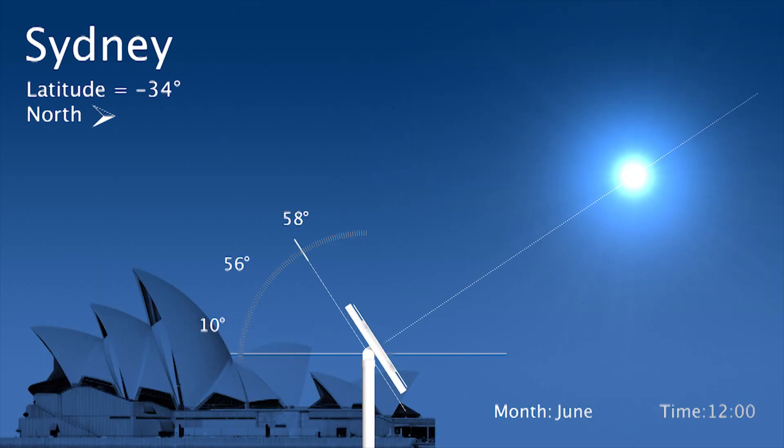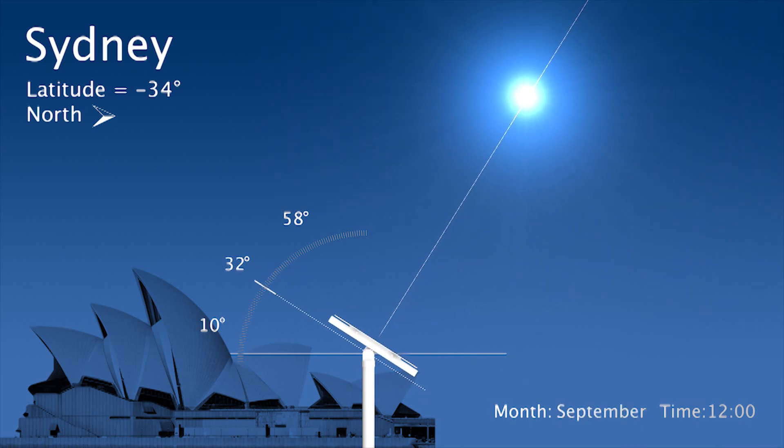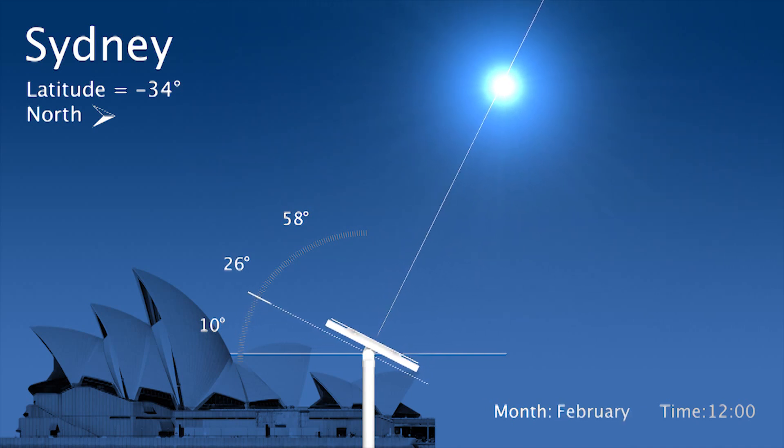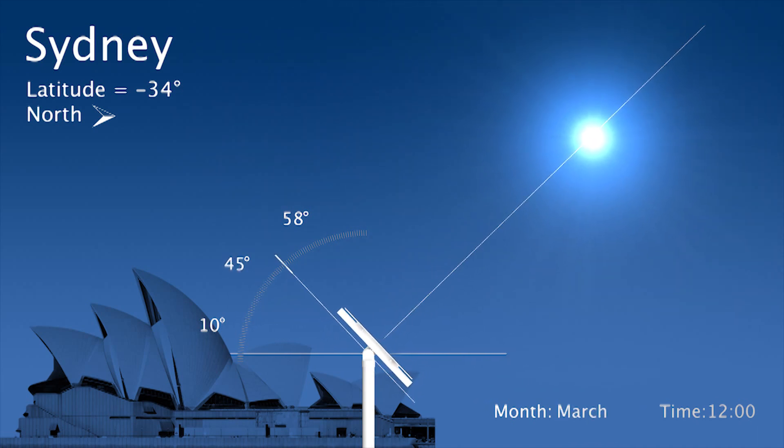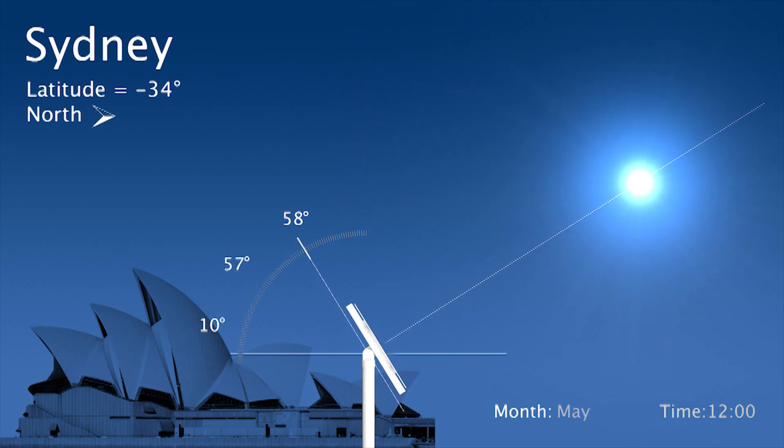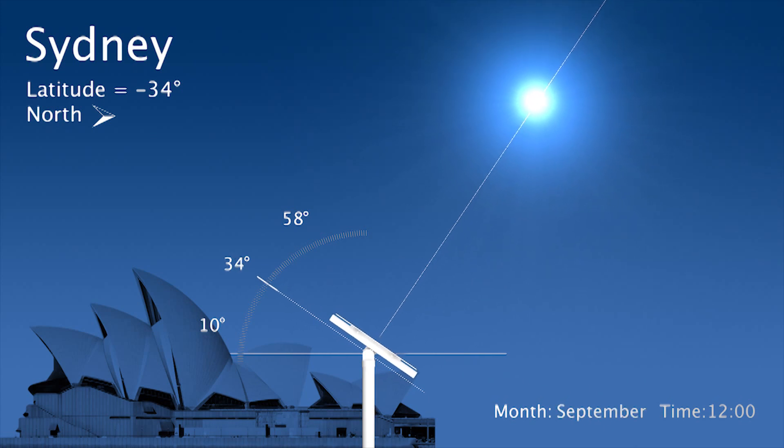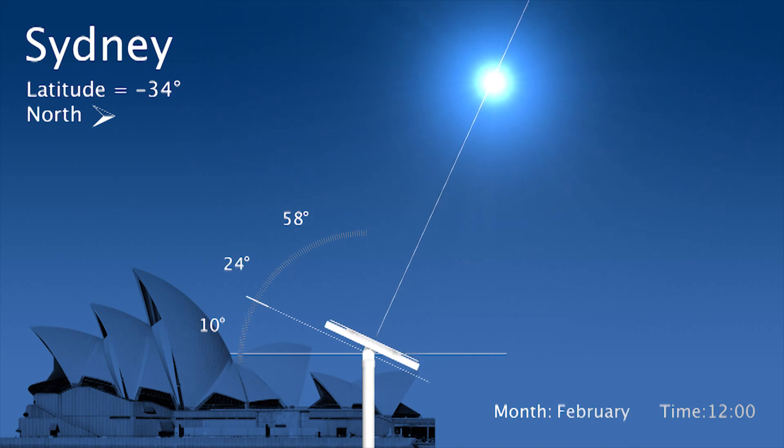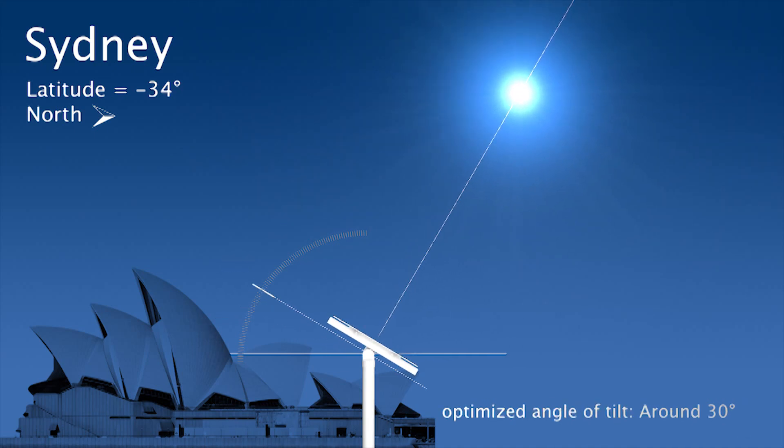Now let's go to the southern hemisphere with a solar panel mounted in Sydney. Sydney has a latitude of around 34 degrees. Note that being in the southern hemisphere, the panel is oriented towards the north. We see that the range of tilts experienced by the PV panel is from 10 degrees to 58 degrees. The optimized angle of tilt in such a case would be around 30 degrees facing north.